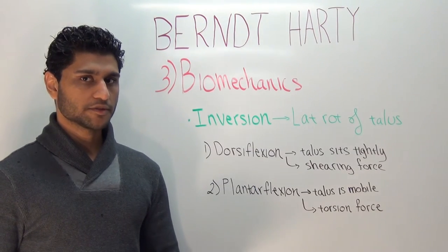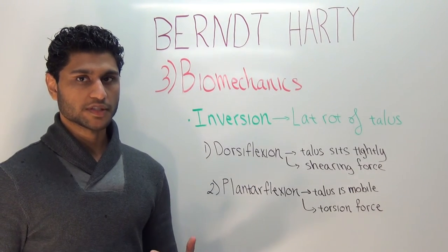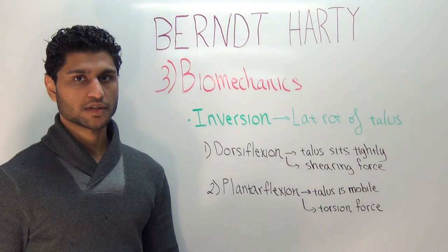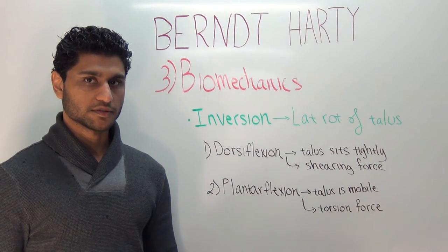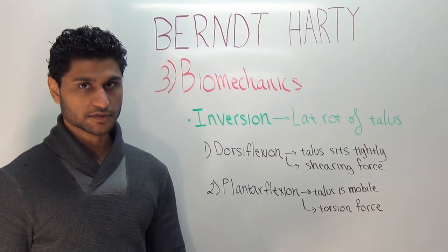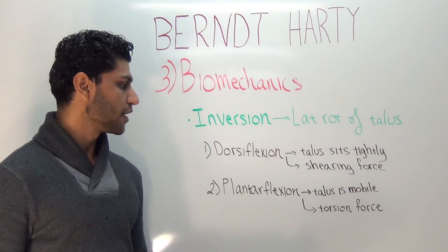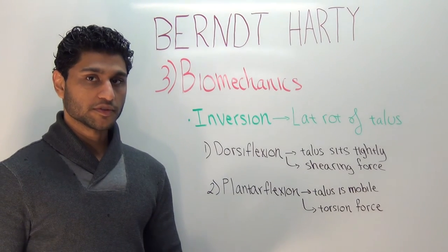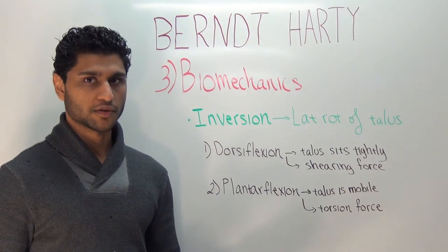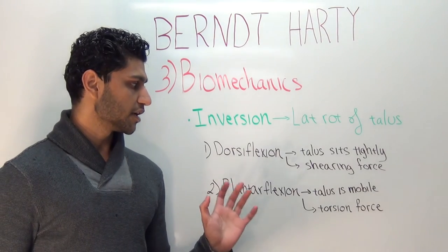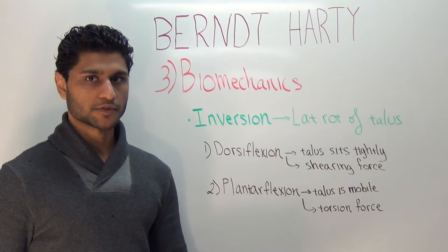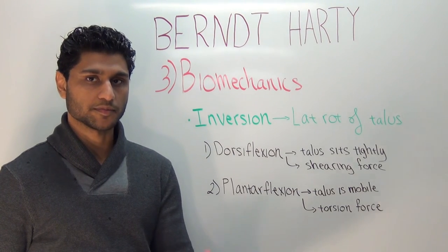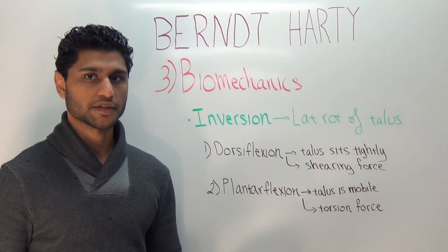Both medial and lateral lesions occur when the foot is inverted at the time of injury. An inversion causes lateral rotation of the talus. The difference occurs in the sagittal plane — meaning whether the ankle joint is dorsiflexed or plantarflexed. The talar dome is wider anteriorly, so during dorsiflexion the talus sits tightly within the ankle mortise. As the talus rotates laterally, its shearing force causes compression of the anterior portion of the dome against the articular surface of the fibula, producing an anterolateral lesion.